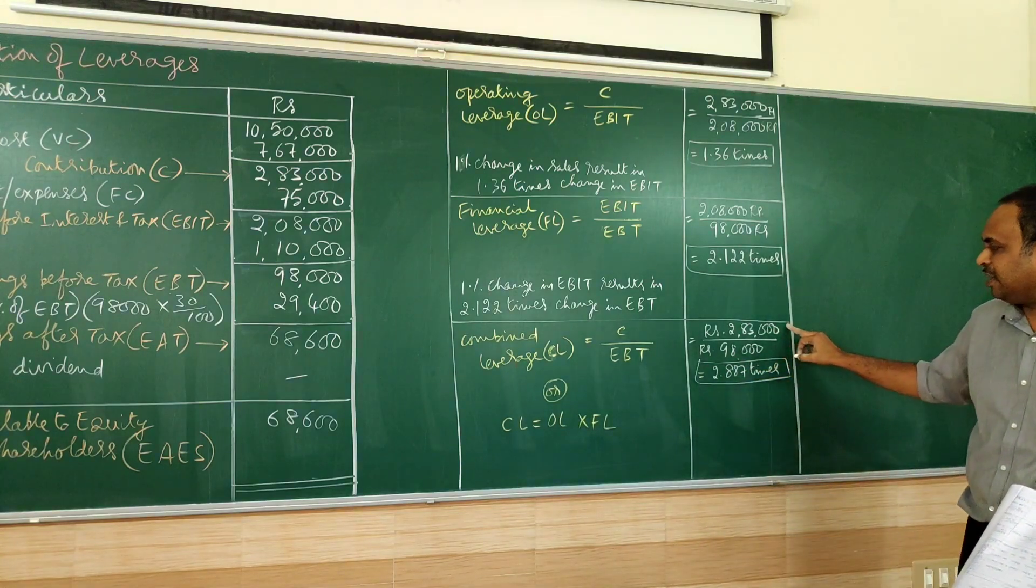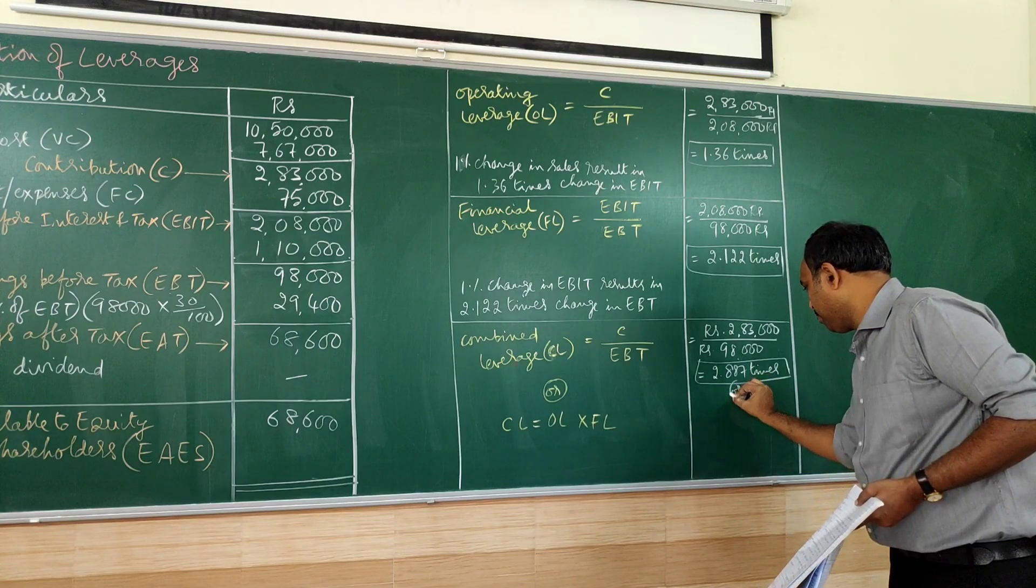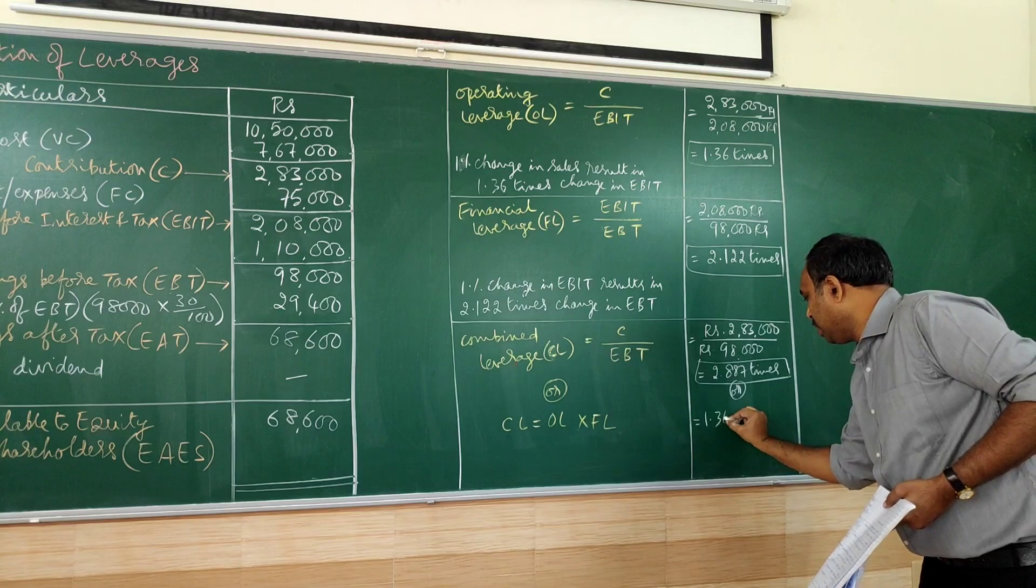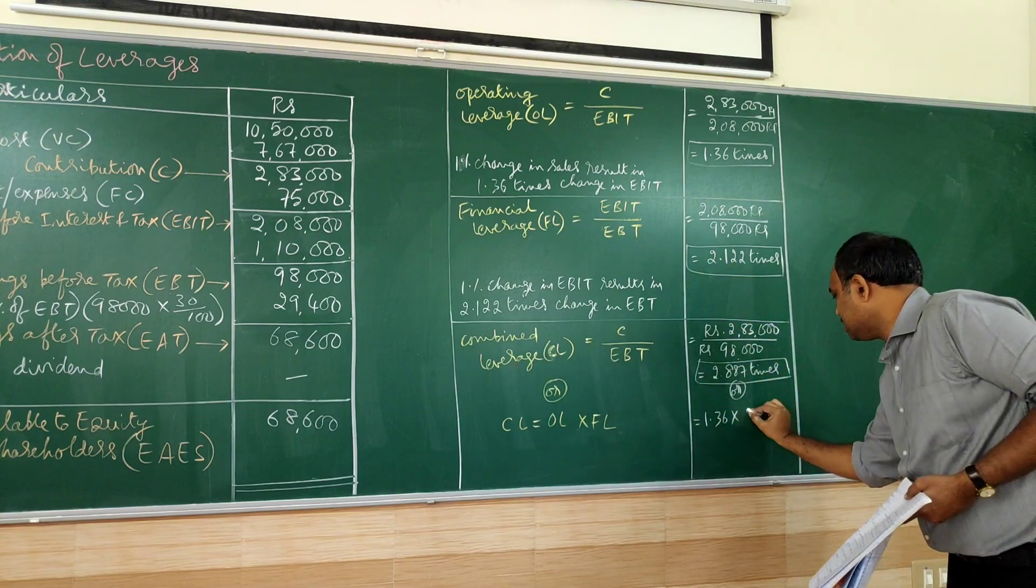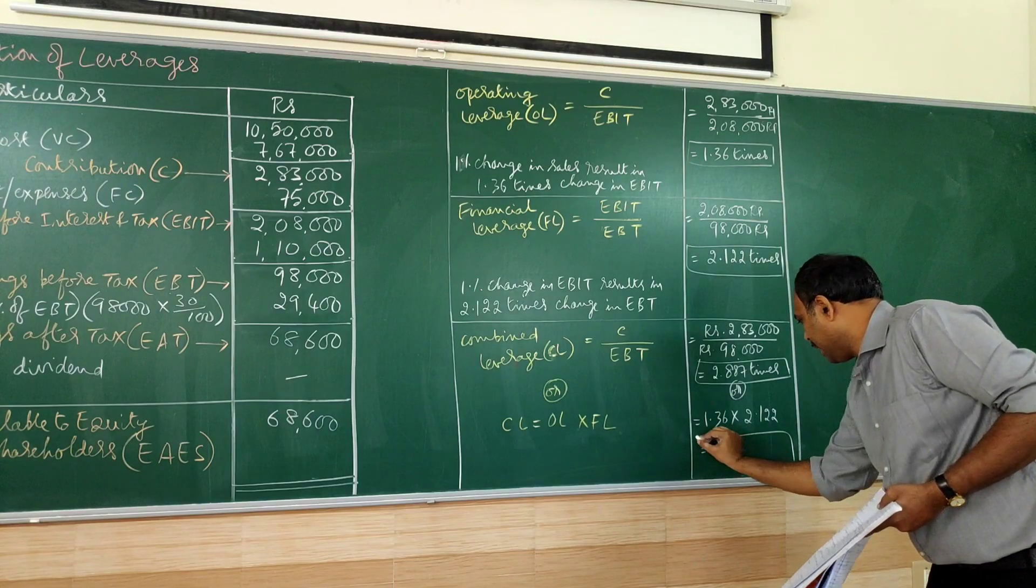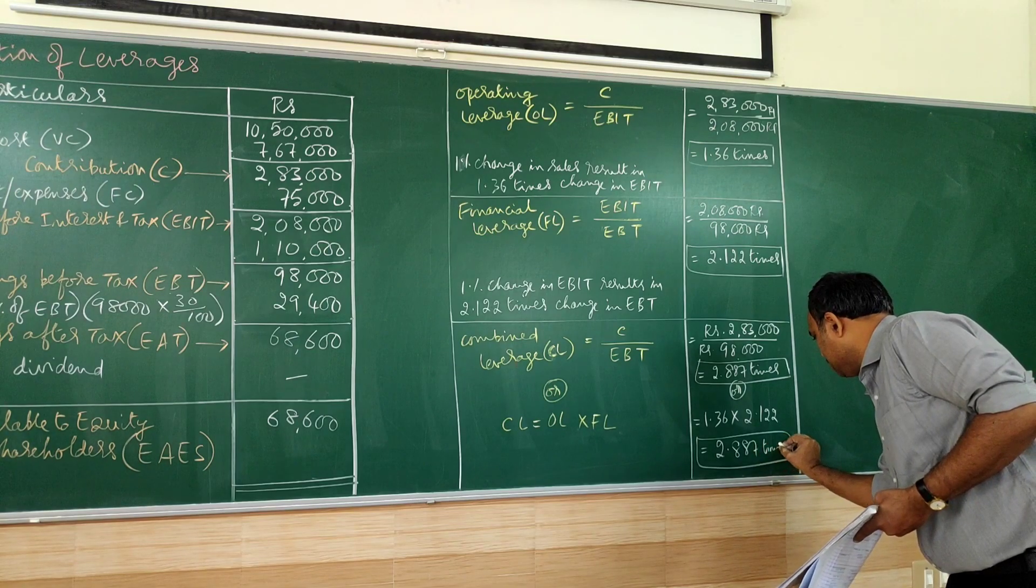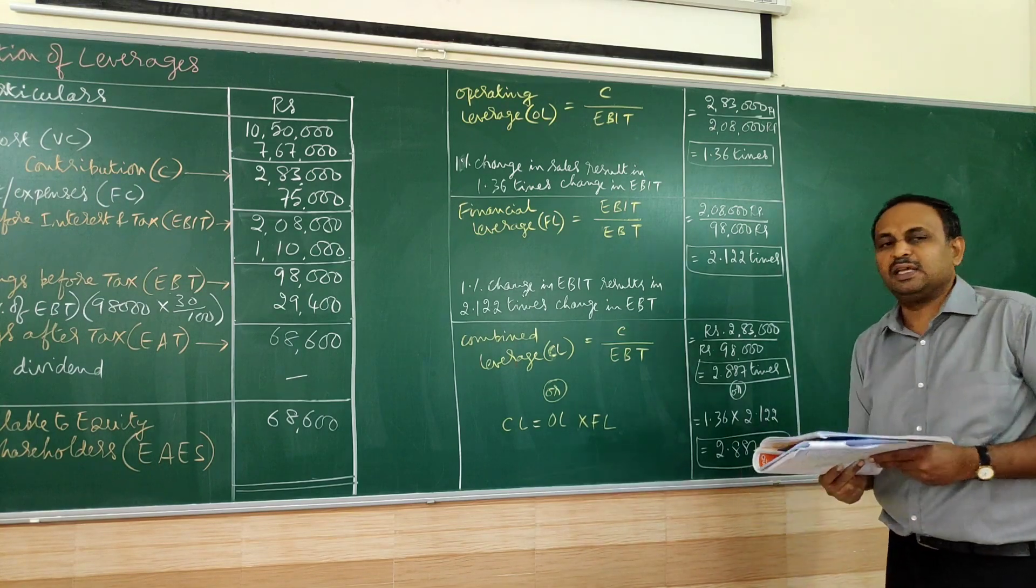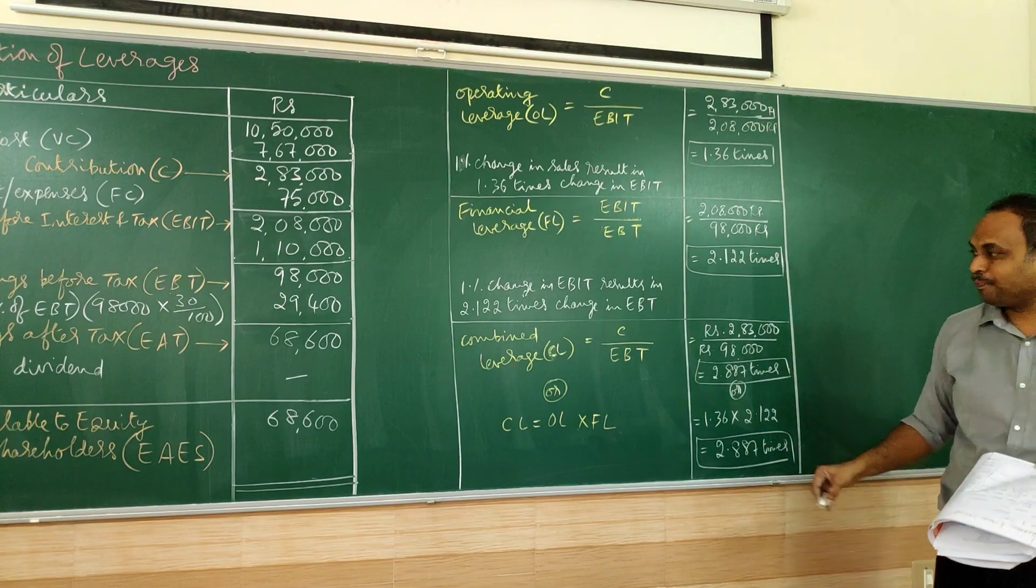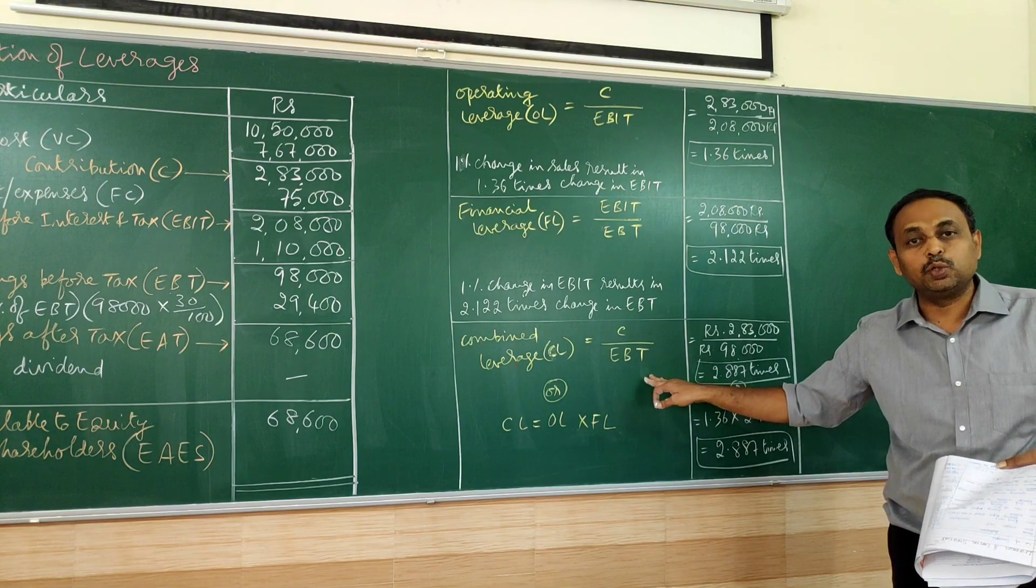Or if you are going for this, OL into FL. OL is 1.36, FL is 2.122. You are going to get the same value again. The decimals, small decimal changes may be there, but the result is same. So in both the methods, the answer will be same.